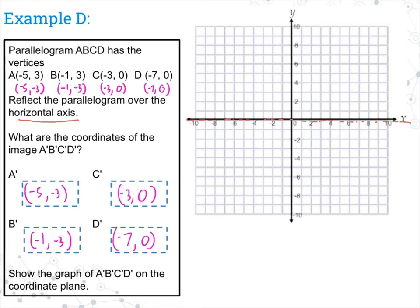Now that we have our points, let's put them on the graph. Go to negative five, negative three — left five, down three — label that A prime. Don't forget your labels, extremely important. Negative one, negative three for B prime. Negative three, zero — just go left, no up or down — for C prime. And negative seven, zero — just go left — for D prime. Connect all the lines to make the parallelogram. Not a super great-looking parallelogram, but it gets the job done and we've got this one correct.